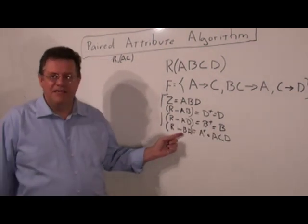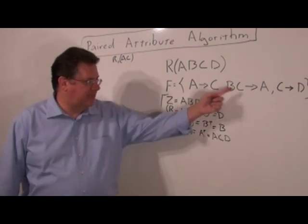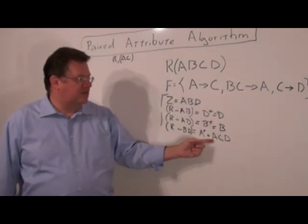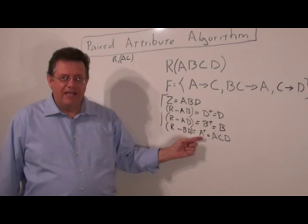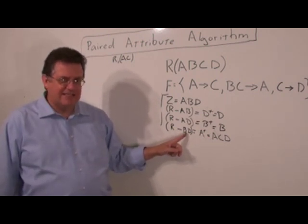Now let's try the next pair. R minus BD gives us A. A closure is ACD. So we see that this A closure contains one of the attributes here, in this case the D.